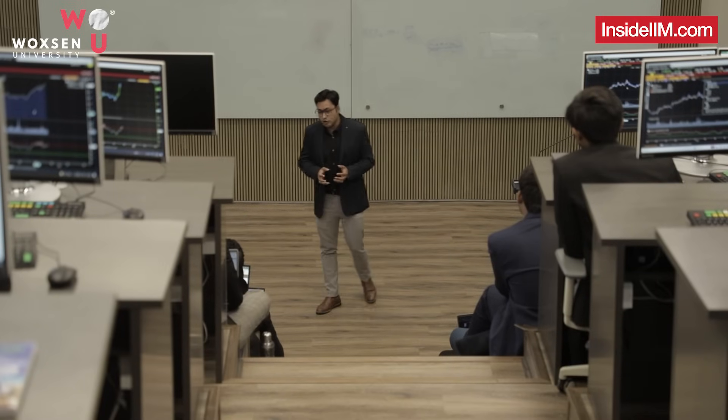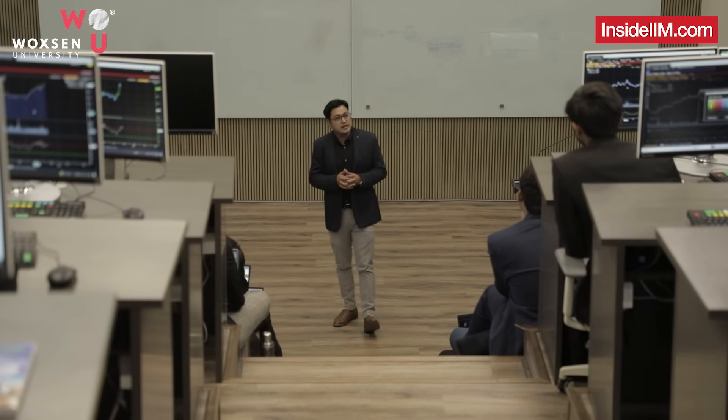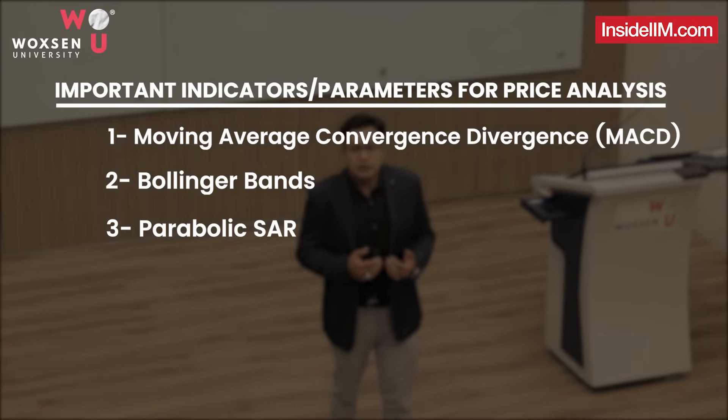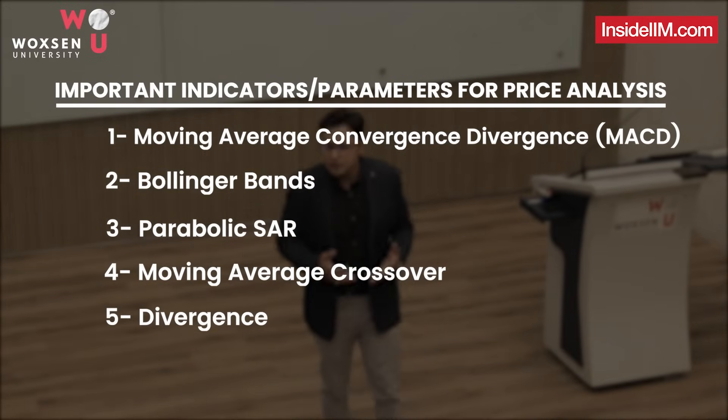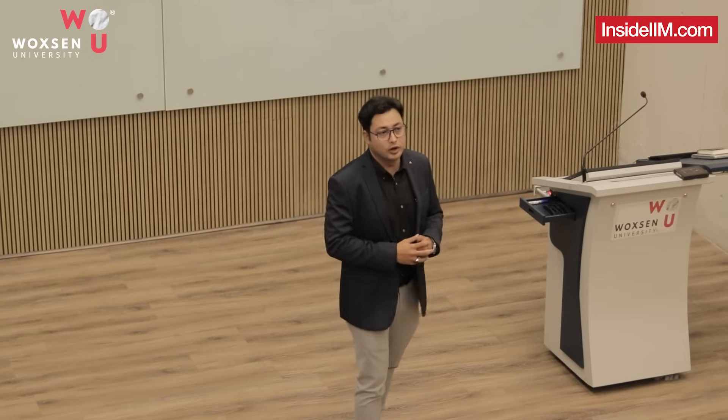RSI is not the only parameter analysts use to understand price actions and future targets. Multiple indicators are used together: MACD, Bollinger bands, Parabolic SAR, moving average crossovers, divergence, and oscillators. These different indicators are combined by analysts, portfolio managers, investment bankers, and broking houses to judge and understand price action and deliver quality output.